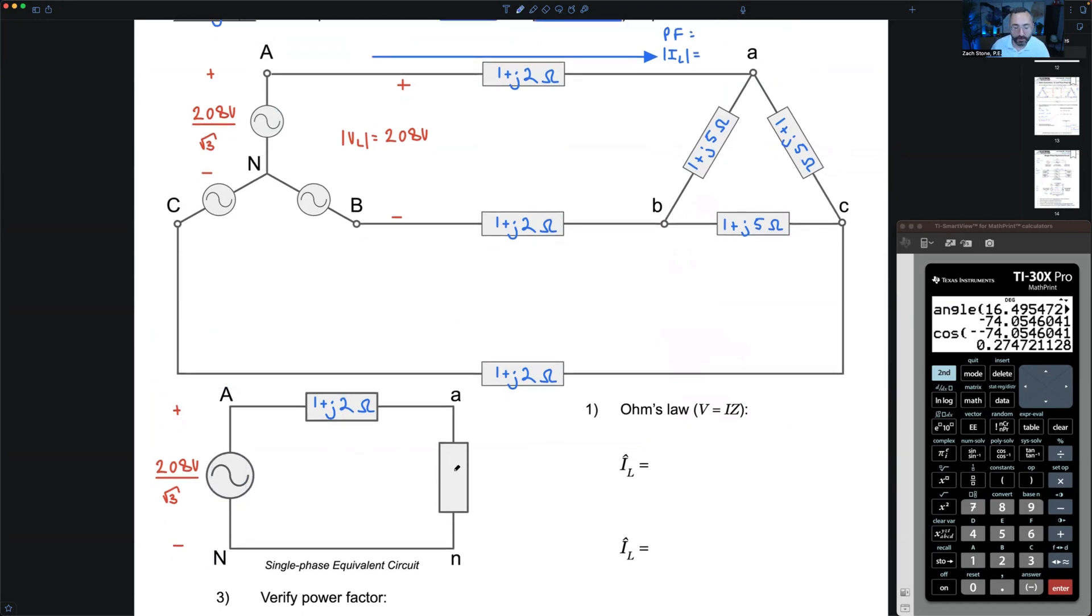What variable goes in this box? I know this is my load, so Z with a vector hat. My load is delta connected. Is this Z delta? No, it's always ZY. Do I have ZY in here? I don't. These are each Z delta because it's delta connected. How do I convert from Z delta to ZY? Divide by three. To go from delta to Y, divide by three. To go from Y to delta, multiply by three.